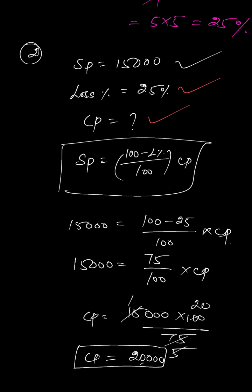For reference, the formulas are: SP equals (100 minus loss percentage) divided by 100 into CP for a loss situation, and SP equals (100 plus profit percentage) divided by 100 into CP for a profit situation.